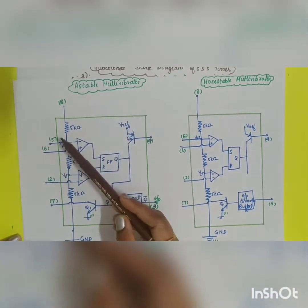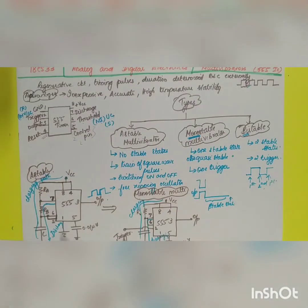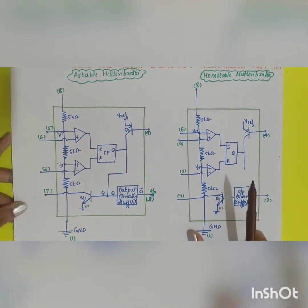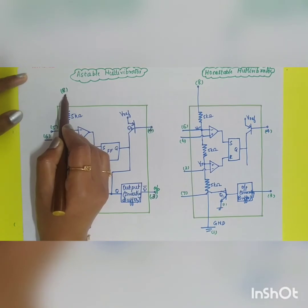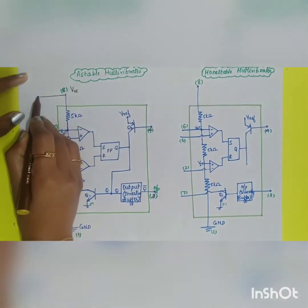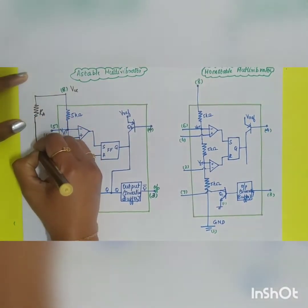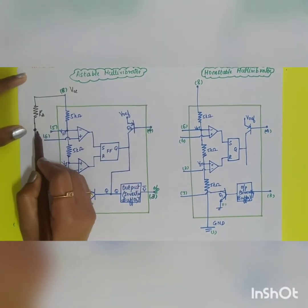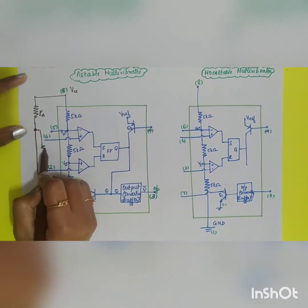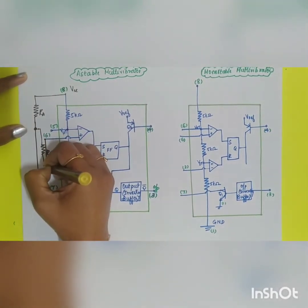For the astable multivibrator, passive components — resistors and capacitors — are connected externally. It consists of two resistors. The connection starts from VCC: resistor RA goes from pin 8 to pin 7, and resistor RB connects from pin 7 to pin 6. Pin 6 and pin 2 are shorted together.